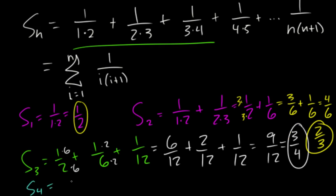Now let's try the fourth one so we get 1 half, 1 sixth, 1 twelfth, and then 1 20th.